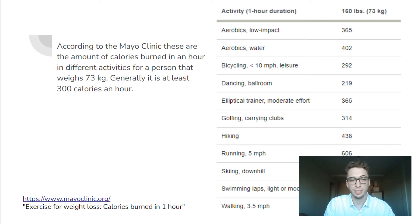So according to the Mayo Clinic, these are the amount of calories burned in an hour for different activities for a person that weighs 73 kilograms.